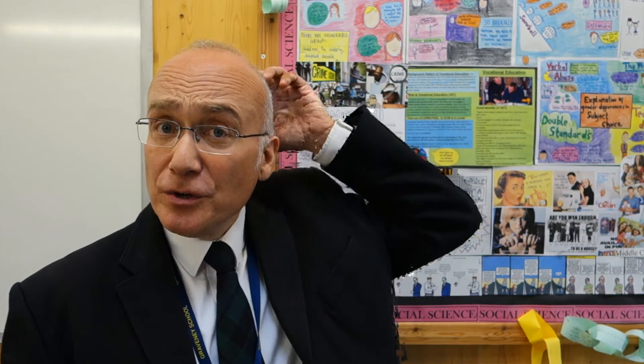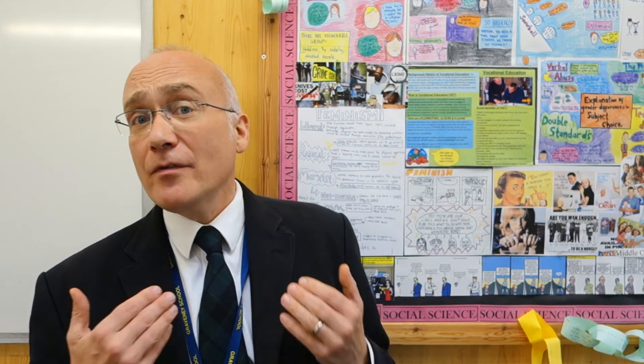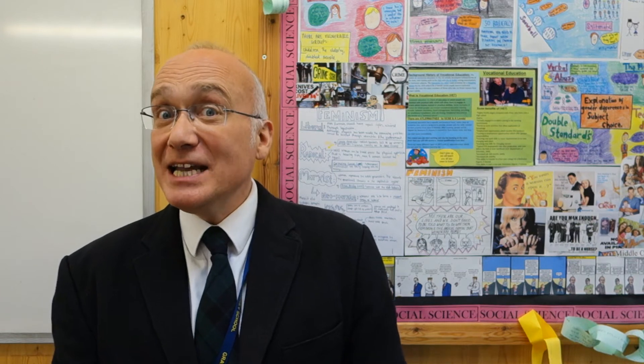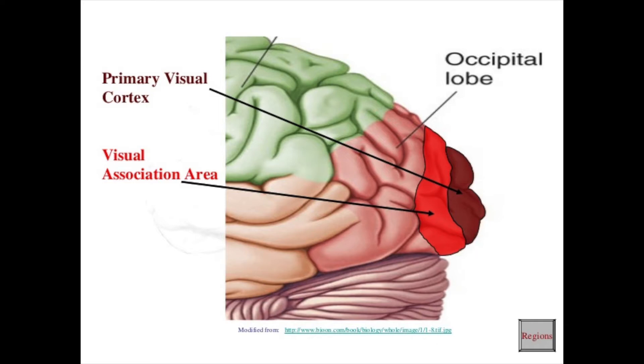If you look at the brains of people who've been blind from birth — people who have never used their primary visual cortex, which is in the occipital lobe at the back of the brain — their visual cortex has never been used for seeing. When these people read braille, fMRI scans detect activity in the visual cortex as they are reading braille. This shows that these people's brains have actually repurposed a part of the brain which is not being used for its normal function and made it do something else.